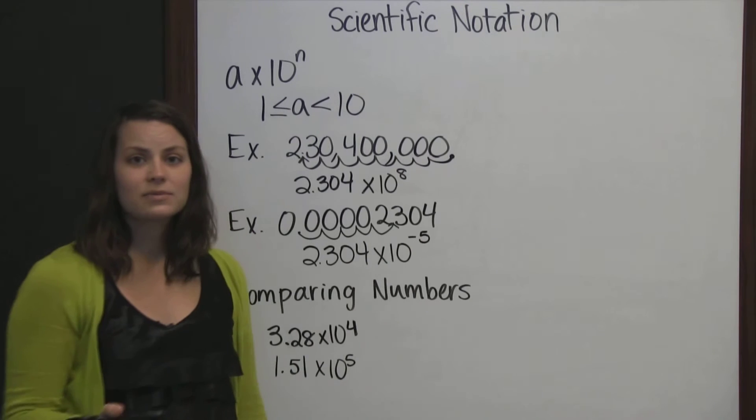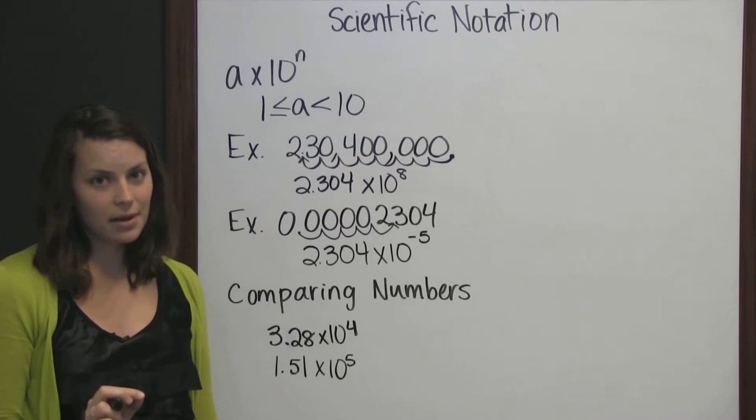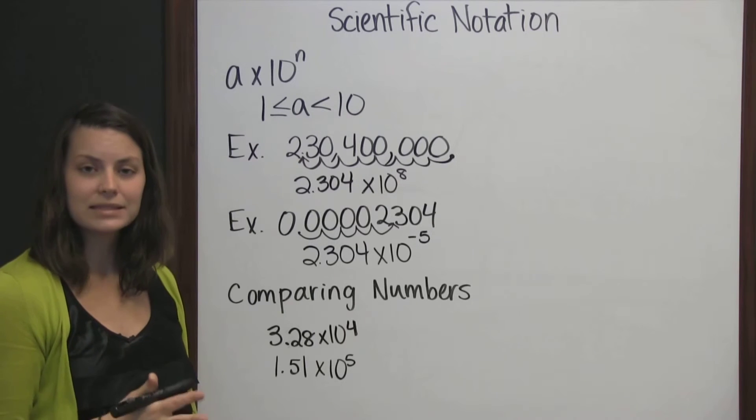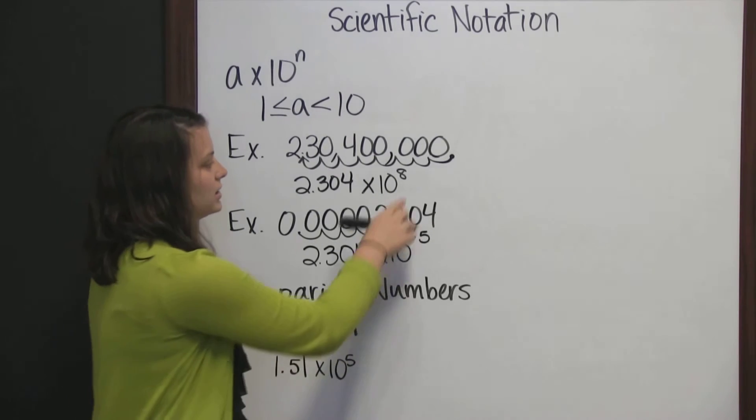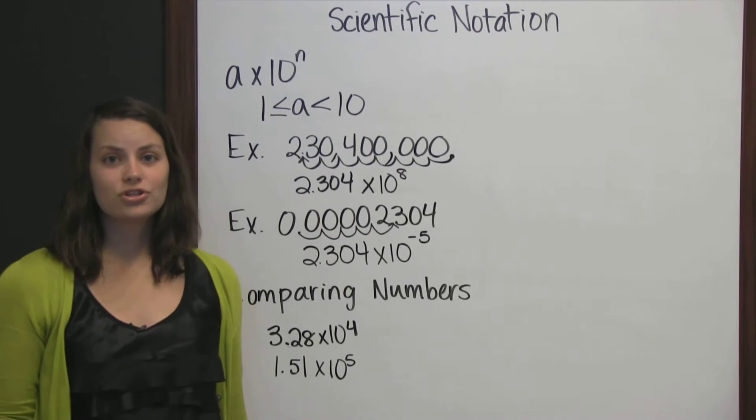And that negative exponent lets you know that that's a very, very small number. It's a decimal. It's less than 1.